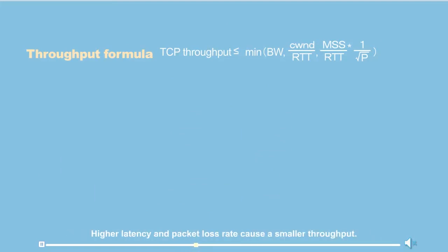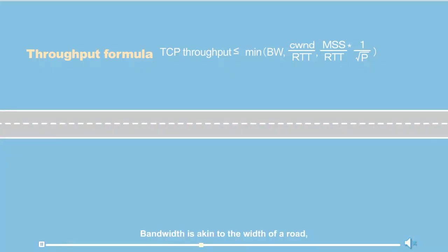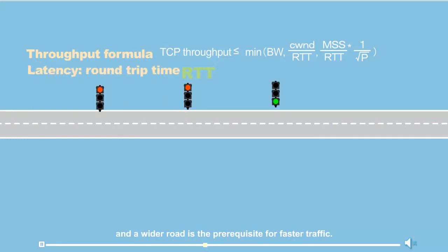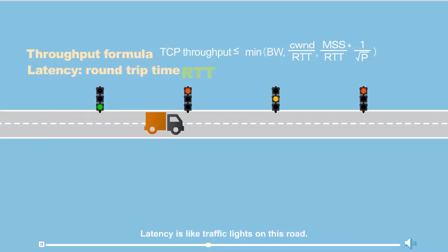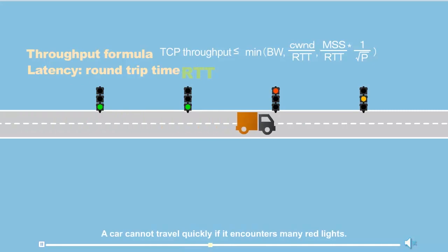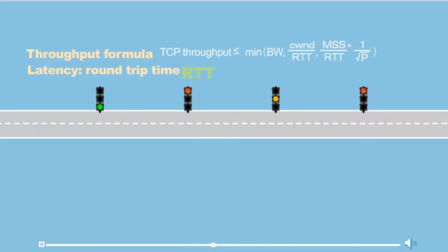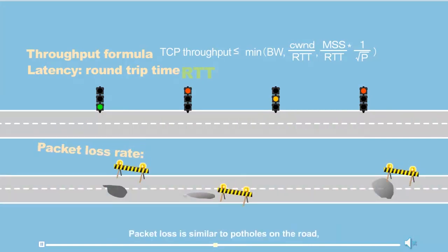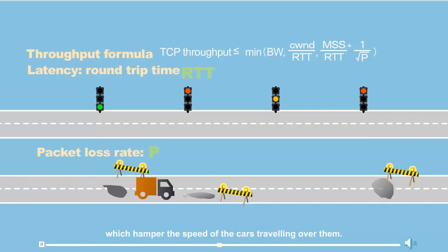Bandwidth is akin to the width of a road — a wider road is the prerequisite for faster traffic. Latency is like traffic lights on this road; a car cannot travel quickly if it encounters many red lights. Packet loss is similar to potholes on the road, which hamper the speed of the cars traveling over them.